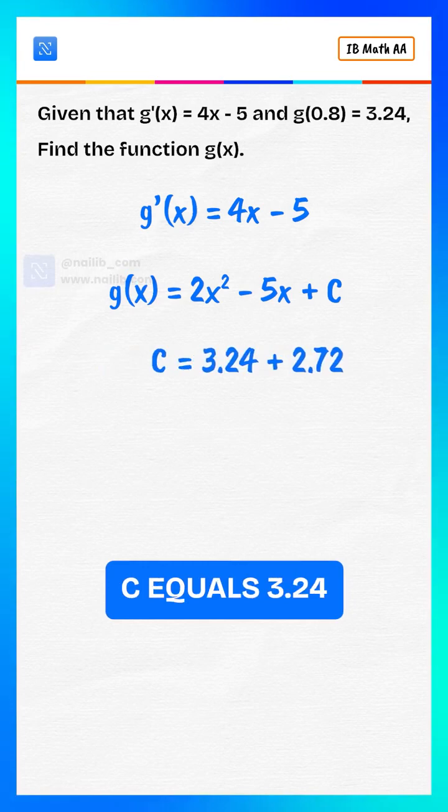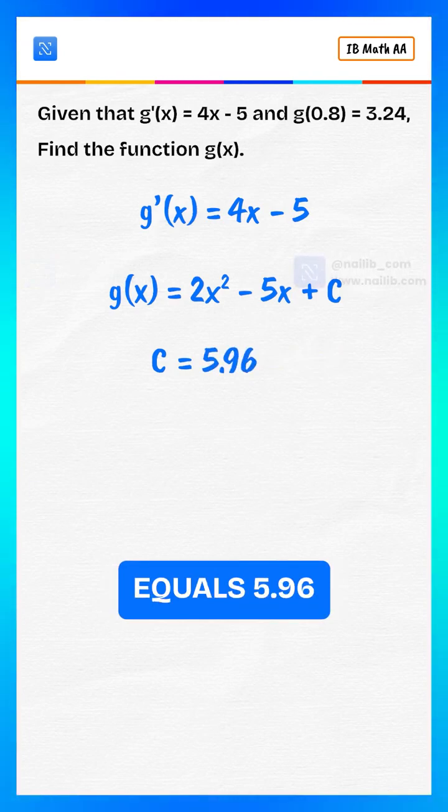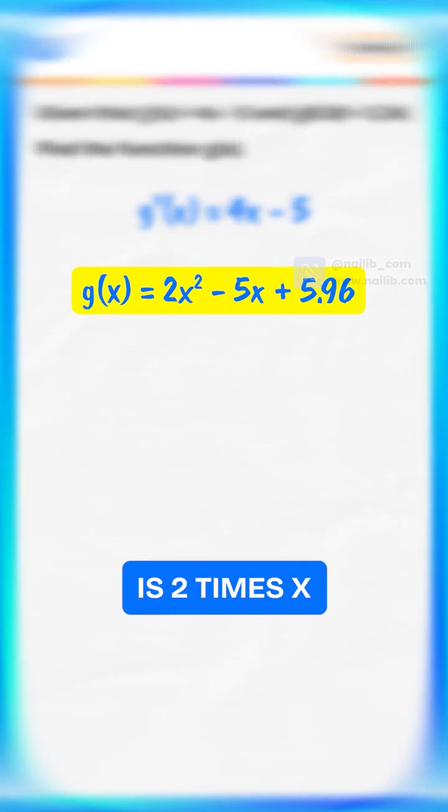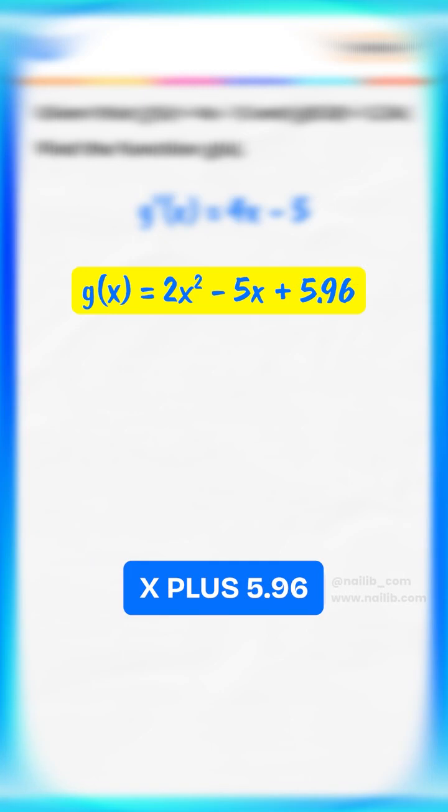c equals 3.24 plus 2.72, then c equals 5.96. So, the function g of x is 2 times x squared minus 5 times x plus 5.96.